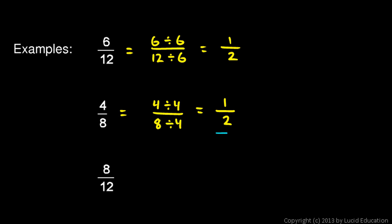Of course, the simpler way to write it is usually preferred. The next one is 8 over 12. Both of those numbers, 8 and 12, are divisible by 4. So let's do 8 divided by 4 and 12 divided by 4.